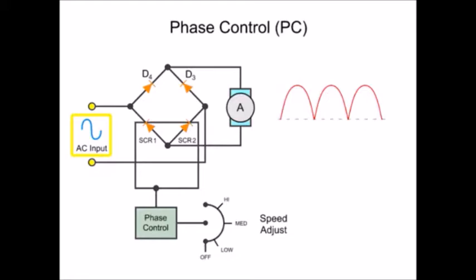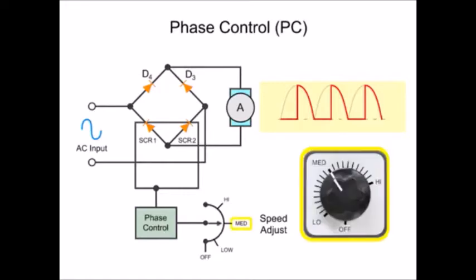This diagram depicts an AC sinusoidal wave being altered by a full-wave rectifier to produce partial half-waves. The partial half-wave output produced is reduced based on when the firing device is activated.